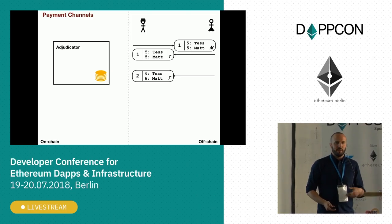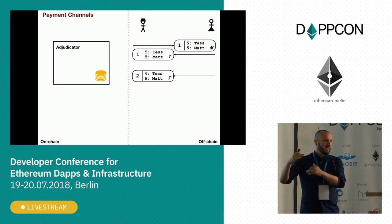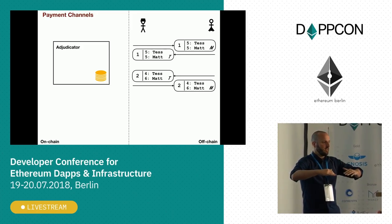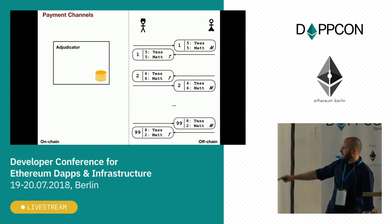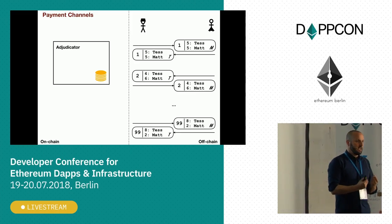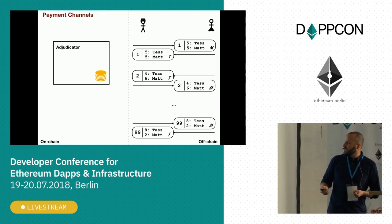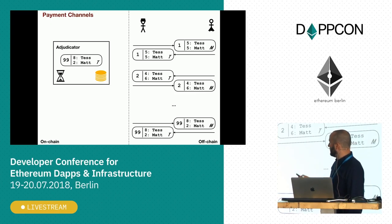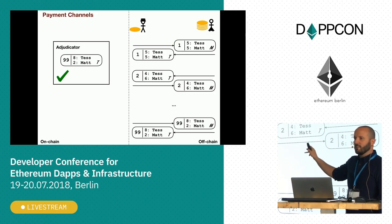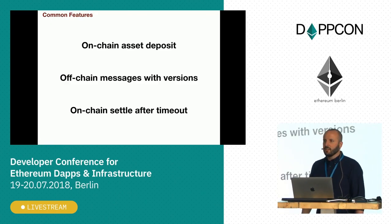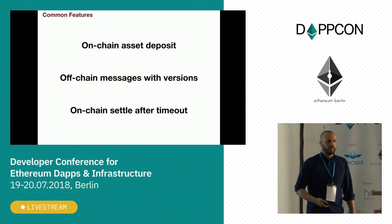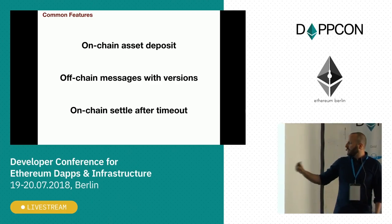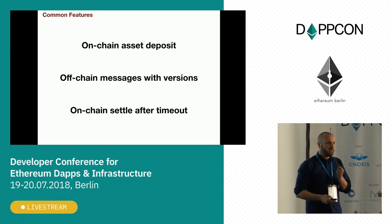What happens next is Tess wants to update the state - maybe Matt bought something for her - so she sends a state over to him: it's now four-six. He echoes back the same state with his signature. They're now agreed the funds split four-six, and they can do this many many times. At the end, say after 99 turns, they want to go to the chain and get those funds back - eight to Tess, two to Matt. One of them presents that to the adjudicator on-chain, which starts a timer. When the timer resolves they split the coins according to the final state. The common features: on-chain deposit, off-chain versioned messages, and on-chain settlement after a timeout.